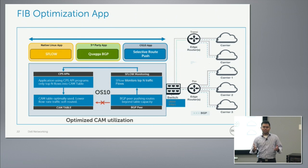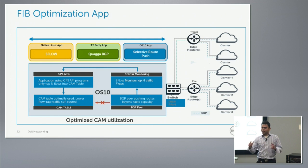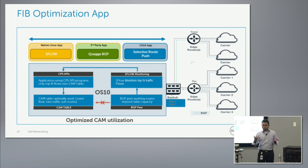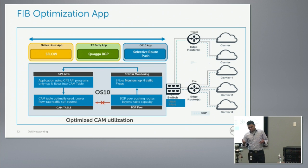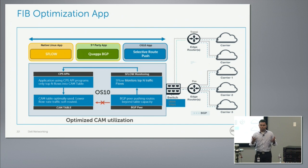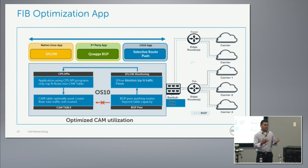If you compare the conventional WAN edge router and the typical top-of-the-rack switch like Dell S6000, we have high-speed links — 10 and 40-gig links on both — and we have BGP, MPLS, and QoS support on both. If you see the difference, CAM is less in the top-of-the-rack switch compared to conventional edge routers.